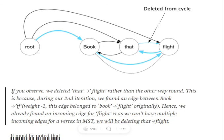A final question: how do we get the dependency relation tags? In dependency parsing we have relationships — 'book' is the head and 'flight' is a dependent, and 'flight' is the head and 'that' is a dependent. However, how to get the tags as in shift-reduce parsing is out of scope for this video and won't be covered here.